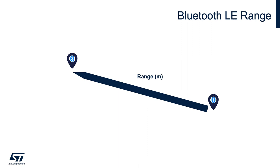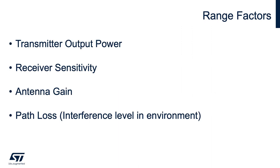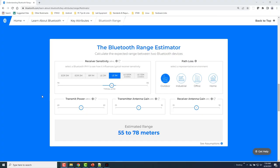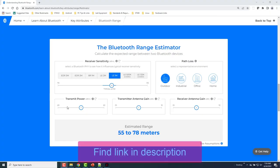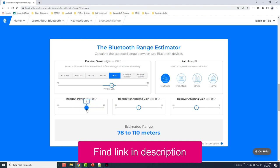Generally speaking, it ranges from 1 to 100 meters. However, in reality, there are many factors affecting range that need to be considered, like transmitter output power, received sensitivity, antenna gain, and path loss or environment. To get an idea of how each of these factors impacts range, you can play around with the range estimator calculator from the Bluetooth SIG website.